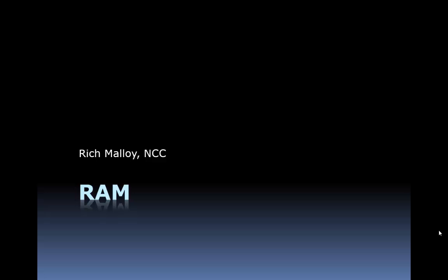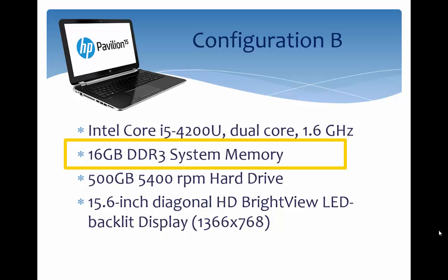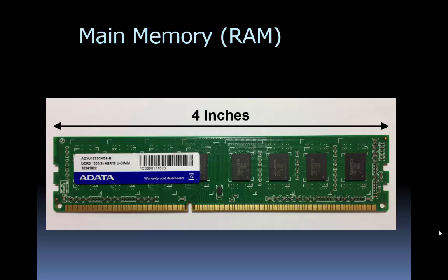Another factor that influences computer speed is what's commonly called RAM. This is configuration B and it has 16 GB of something called DDR3 system memory or RAM. RAM is an acronym meaning random access memory — that doesn't really mean much, because all memory is random access now. A better way to refer to it would be to just call it main memory.